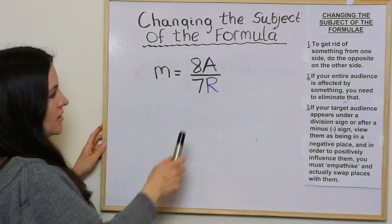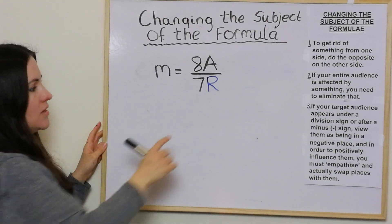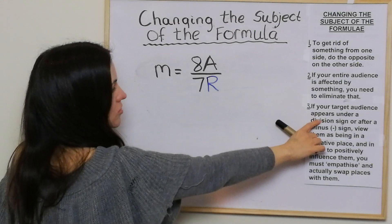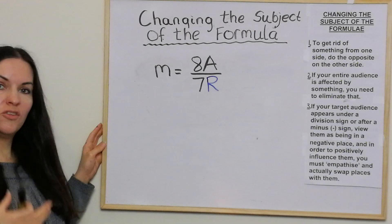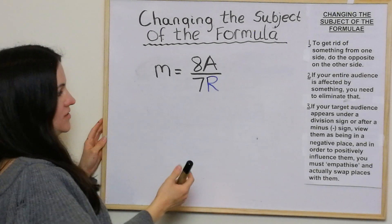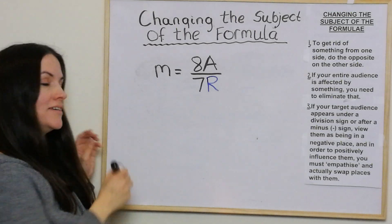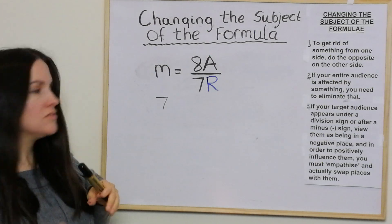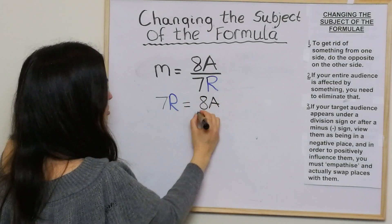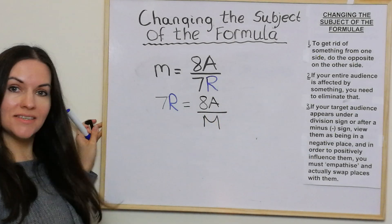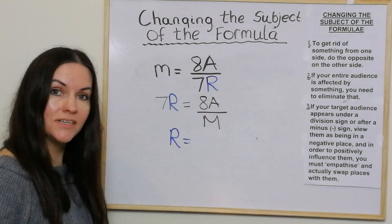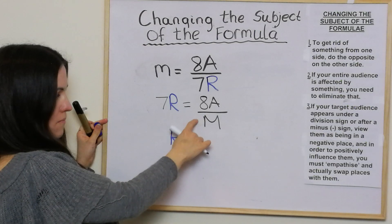This example uses division, but we think about it the same way. If your target audience appears under a division sign, they're not in a very good place, and to help them we empathise and swap places. We bring the seven r up and put the m underneath, so seven r equals eight a over m. To make r the subject, we divide this side by seven — the best way is just to put the seven on the bottom — giving r equals eight a over 7m.